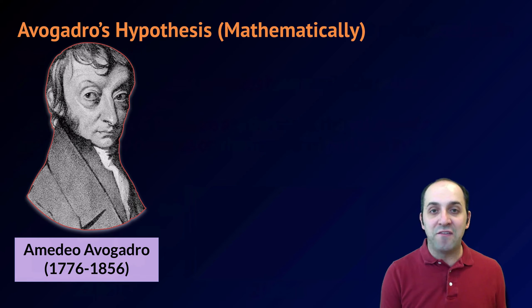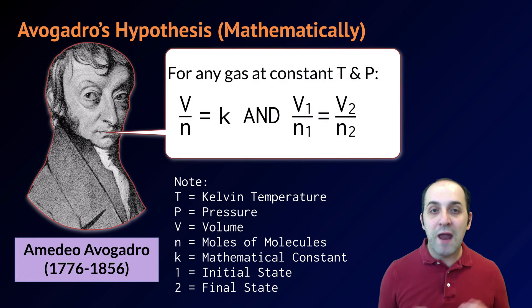Mathematically, Avogadro's hypothesis can be described as follows. For any gas at constant temperature and pressure, the volume divided by the number of molecules of the gas is equal to a constant value. This also means that the product of the initial volume divided by the initial number of molecules of a gas is equal to the final volume divided by the final number of molecules of the gas.